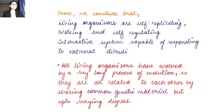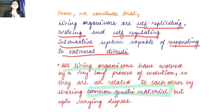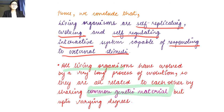In summary, we conclude that living organisms are self-replicating, evolving, and self-regulating interactive systems capable of responding to external stimuli. All living organisms have evolved through a long process of evolution and are all related to each other — we all share common genetic material, but to different degrees. For example, we have more in common with apes than with onions, though humans and onions still share some common DNA. On to the next video.